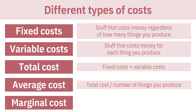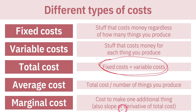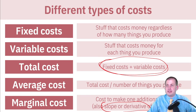So average cost is total cost divided by the number of things you make. The marginal cost — hopefully you're getting more familiar with this term — marginal just means the cost of doing one more thing. The marginal cost is the cost of creating one additional unit. If you can derive a total cost formula, the marginal cost is the slope or derivative of that total cost. You can graph it and work with it. A firm has to pay attention to all of these different costs to make sure they don't go out of business or produce so much that costs become unmanageable.